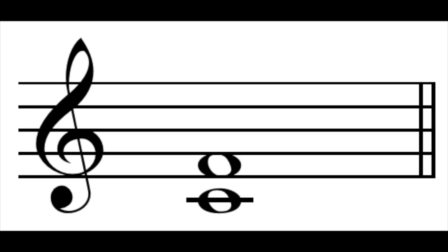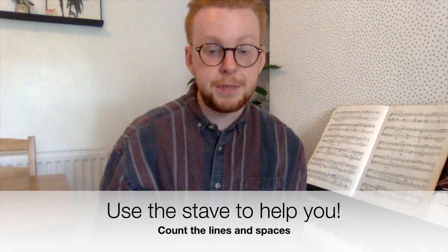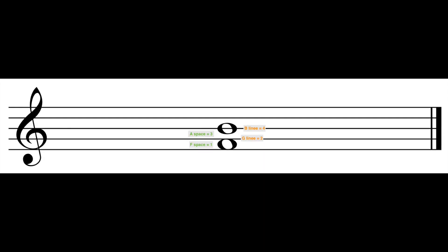So if I said to you C to F, we'd count up — that's a fourth. Let's try it with C to B. Count up: C, D, E, F, G, A, B — that would be a seventh. Now, if you're not sure on your major scales, you can use the stave to help you. Count up the lines and the spaces from the bottom note until you reach the top one. For example, let's look at F and B. The F space is one, the G line is two, the A space is three, and the B line is four. So F to B is a fourth.